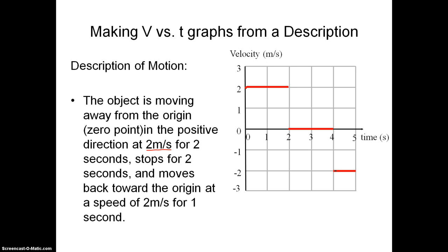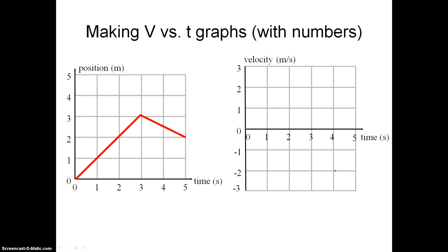Let's now look at a situation where you're given a position versus time graph, and you need to make a velocity versus time graph, which describes the same type of motion that the object is doing on a velocity graph rather than a position graph.